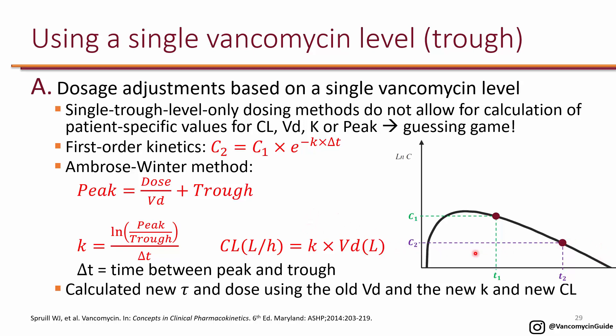When you only have a single level, you only have C2 — you don't have C1 — so you cannot truly calculate K. Although you have a level from the patient, this method is not truly individualized, because the only way to truly individualize the pharmacokinetics is to have two levels to actually calculate K. With a single trough, you have to estimate what the peak would be.